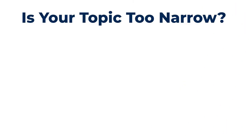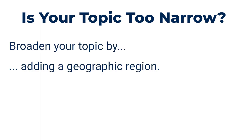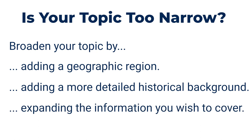But now suppose that your topic is too narrow. Try out different ways that you could broaden it. It could be broadened by adding a geographic area to the topic, or by creating a broader context through a more detailed historical background, or even by expanding the depth of information that you want to cover. You might have to try out a few different methods before you're able to broaden your topic in the way that you need for your paper.